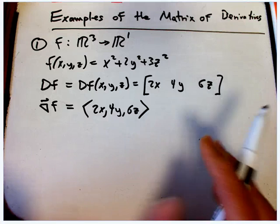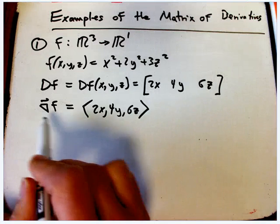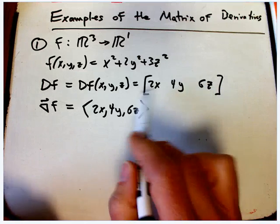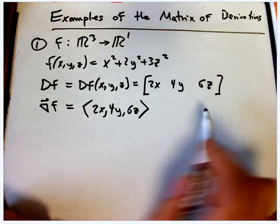And I want to talk a little bit about why you would change perspective. Why, instead of using the gradient, you might use the row vector, or the 1 by 3 matrix. That really requires further explanation to really get into why.